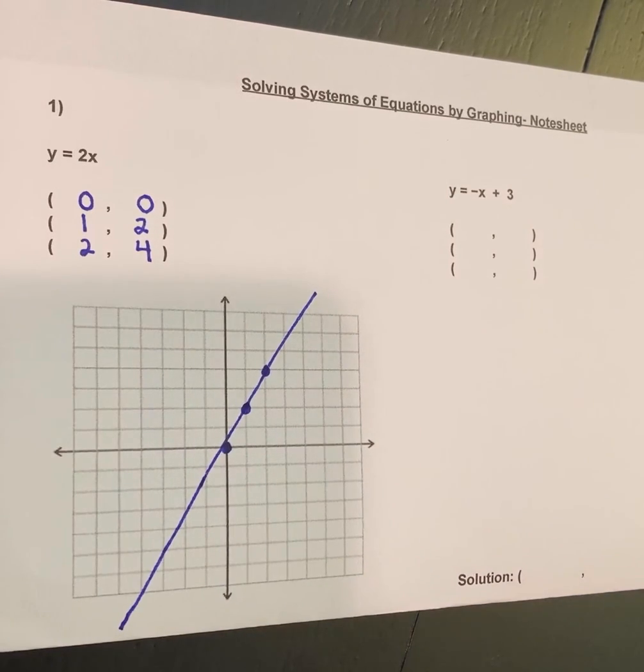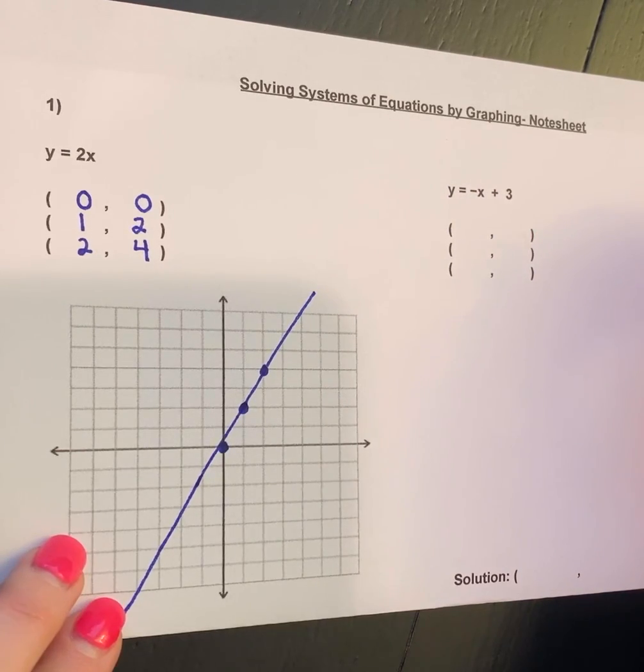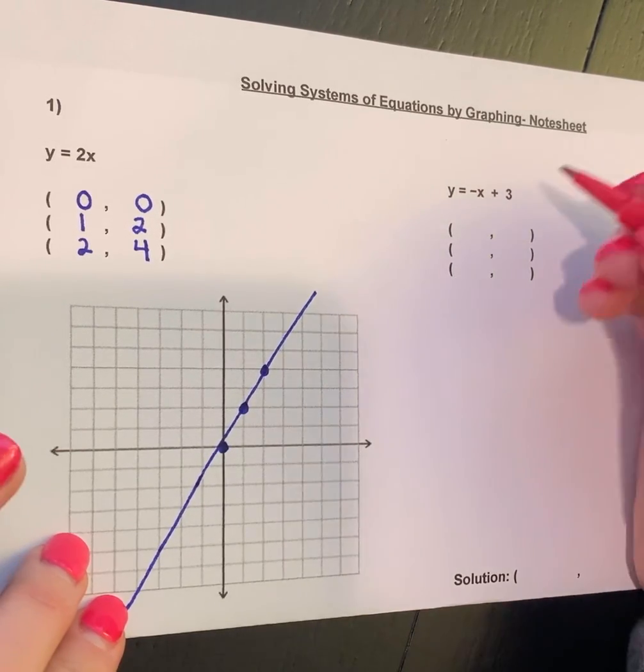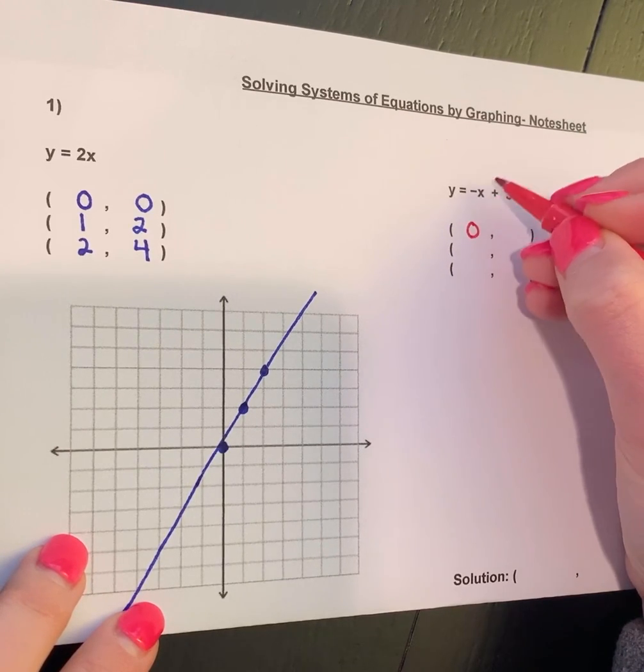Then we move on to the next equation. Notice that our next equation we have a -x + 3, so we have to make sure we're paying attention to everything here. For example, let's start with 0. If I plug 0 in for my x value, I get 0 + 3, so y ends up being 3.